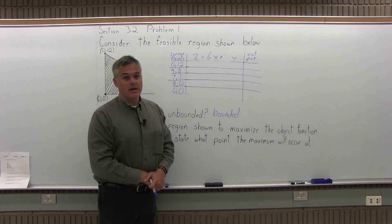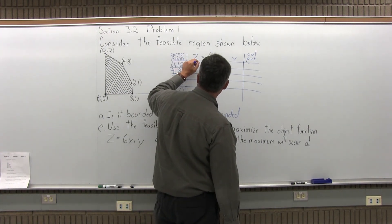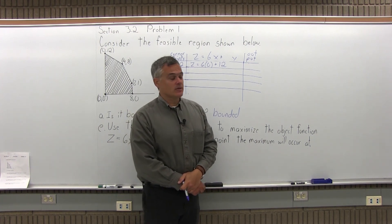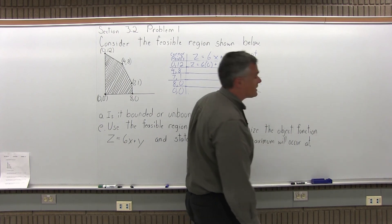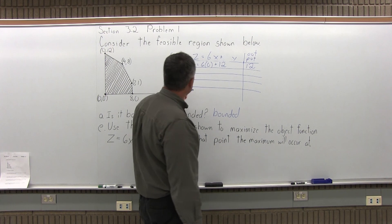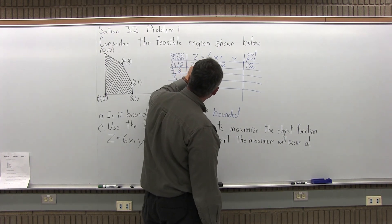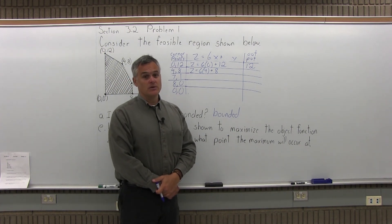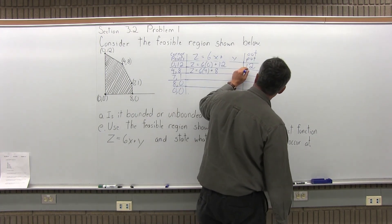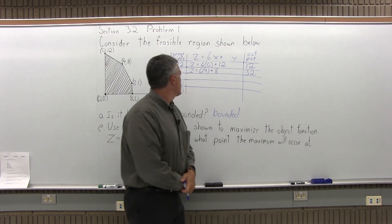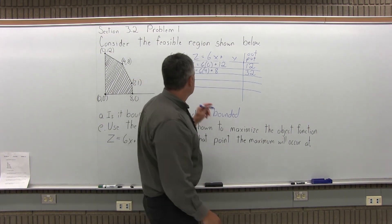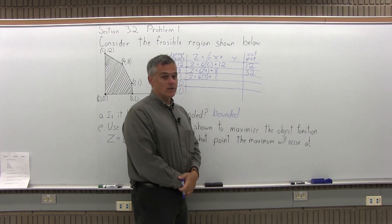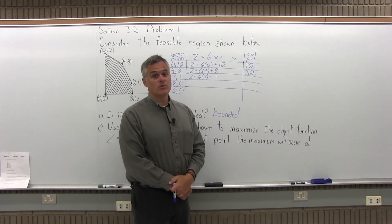For object function z equals 6x plus y: first corner point (0,12) gives z equals 6 times 0 plus 12, so 0 plus 12, output of 12. Next, (4,8): z equals 6 times 4 plus 8, so 24 plus 8, output of 32. Next corner point (7,1): z equals 6 times 7 plus 1, so 42 plus 1 is 43.